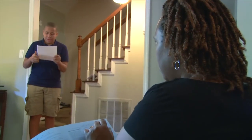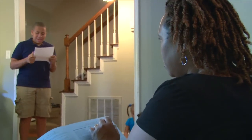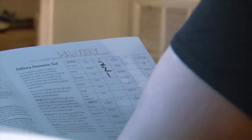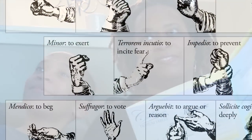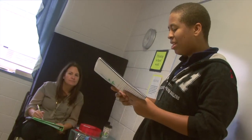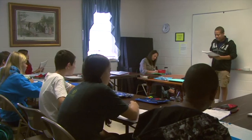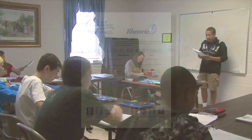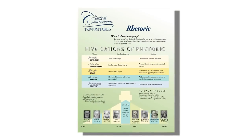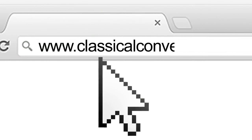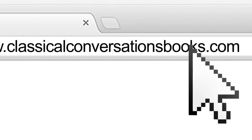On the top half, parents can use a dry erase marker to write different aspects of the student's speech, like tone, movement, and volume. The bottom half shows how hand gestures can add meaning to a speech. With these delivery elements, your student will move toward presenting in a compelling manner. To purchase this resource and other great tools like it, visit www.classicalconversationsbooks.com.